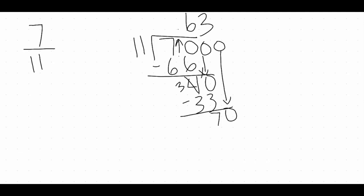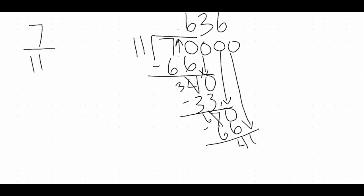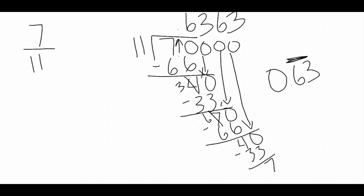Now we divide 11 into 70 again — 11 goes into 70 six times, giving us 66, subtract to get a remainder of 4. Adding another 0 and dropping it down, 11 goes into 40 three times. Hopefully we can notice we're going to continue to get the same combination — a repeating 6, 3, 6, 3 ongoing. So very similar to the previous example, this is a repeating decimal. We write our answer as 0.63 with a bar over the 6 and 3, because that is the part that is repeating.